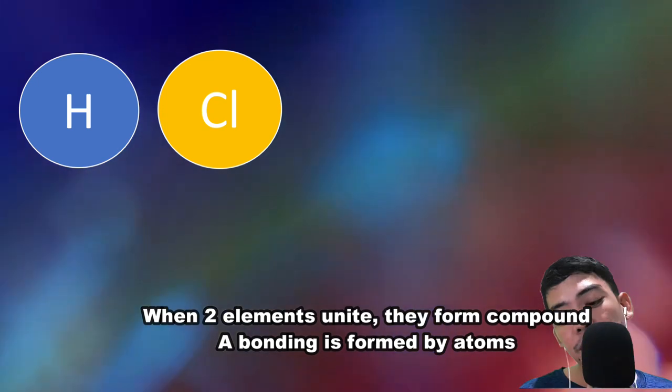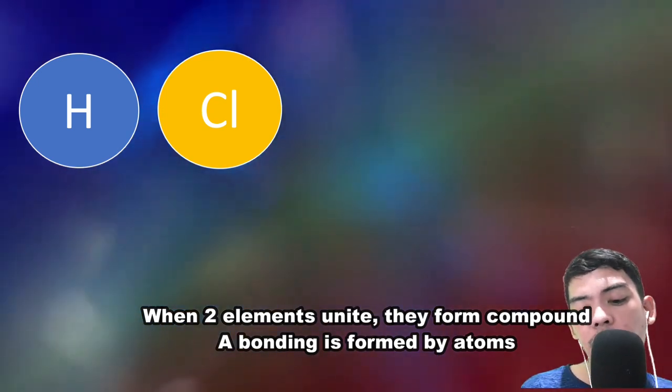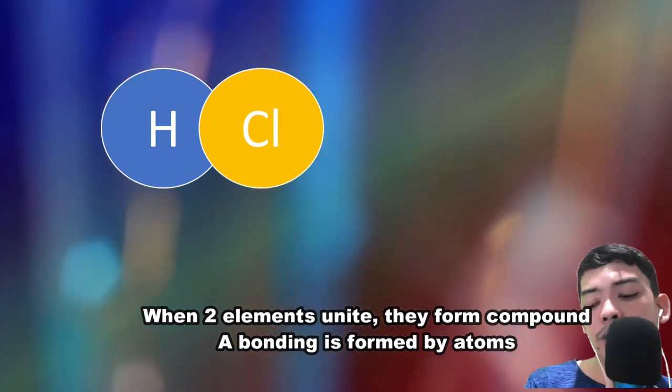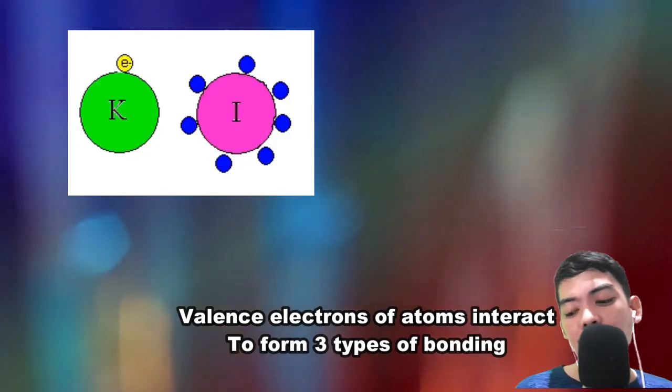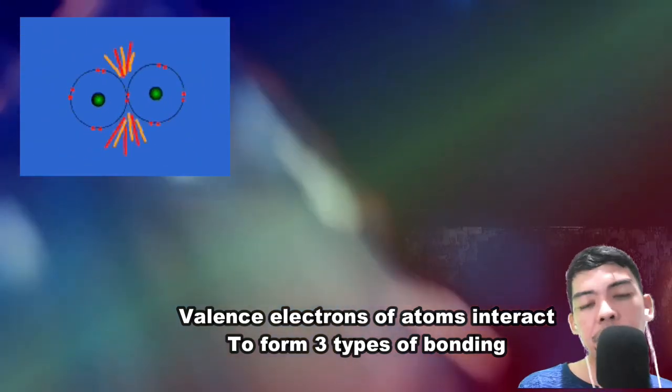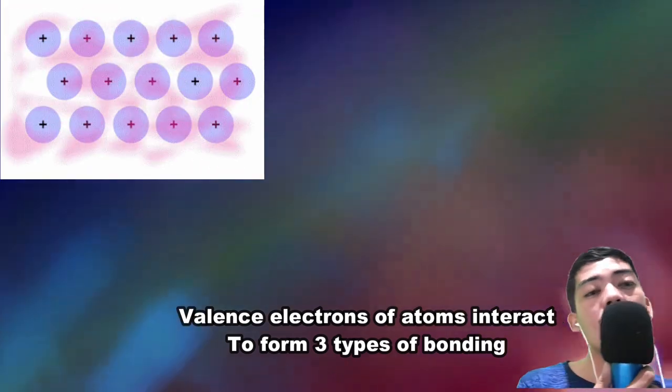When two elements unite, they form a compound. A bonding is formed by atoms. Valence electrons of atoms interact to form creates a bonding.